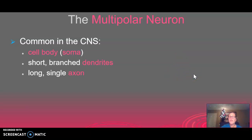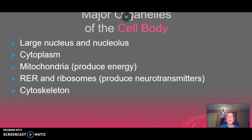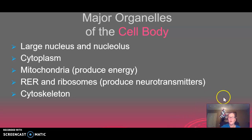The neuron we just looked at is called a multipolar neuron — the most common type. There are others that have axons going each direction from the soma. Keep in mind that the cell body or soma is just like any other cell body. It has mitochondria and specifically the rough endoplasmic reticulum, which produces the neurotransmitters. Those are then packaged by the Golgi apparatus and used as the neurons fire.